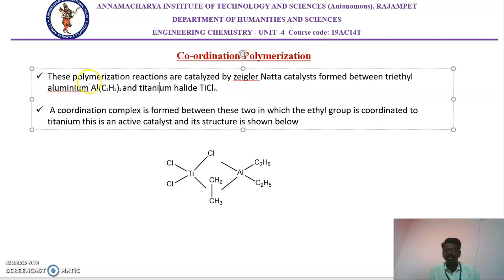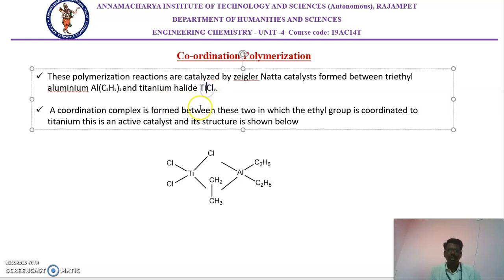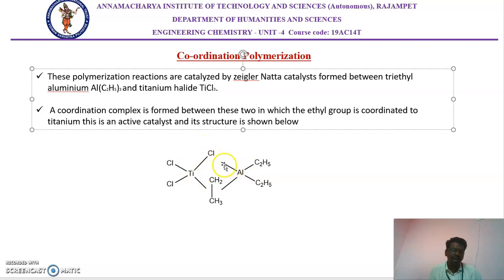In this polymerization, we are mostly using the Ziegler-Natta catalyst. Ziegler-Natta is a scientist who invented that catalyst. It is made up of triethylaluminium and titanium trichloride or titanium tetrachloride. This catalyst is formed by complexation reactions — a complex is formed between the titanium and the ethylene of the ethyl molecules. This catalyst is used for the polymerization reaction, and here we are not using any initiators; directly we are using this catalyst to proceed the polymerization reactions.